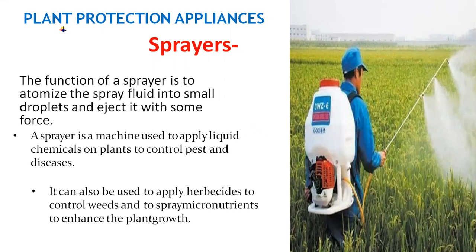A sprayer may be defined as a mechanism in which the liquid is broken up into droplets which are discharged with some force. The main function of a sprayer is to atomize the spray fluid into small droplets and eject it with some force, which is used to apply liquid chemicals on plants to control pests and diseases. It can also be used to apply herbicides to control weeds and to spray micronutrients to enhance plant growth.